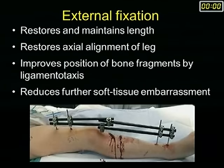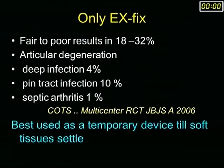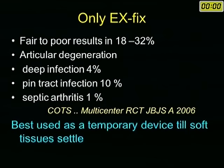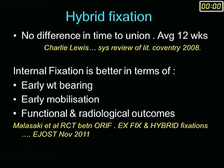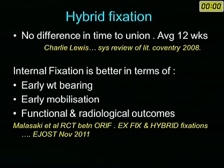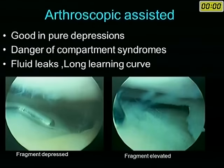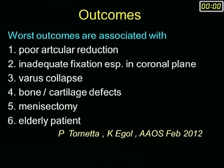External fixation is good if soft tissues do not allow internal fixation, but it should be used only as a temporary device — as concluded by the Canadian Orthopaedic and Trauma Society after a multicentre RCT published in JBJSA 2006. Hybrid fixation shows no difference in time to union, and internal fixation is much better overall. Arthroscopic-assisted technique is good for pure depressions but has a long learning curve and can cause iatrogenic compartment syndrome.